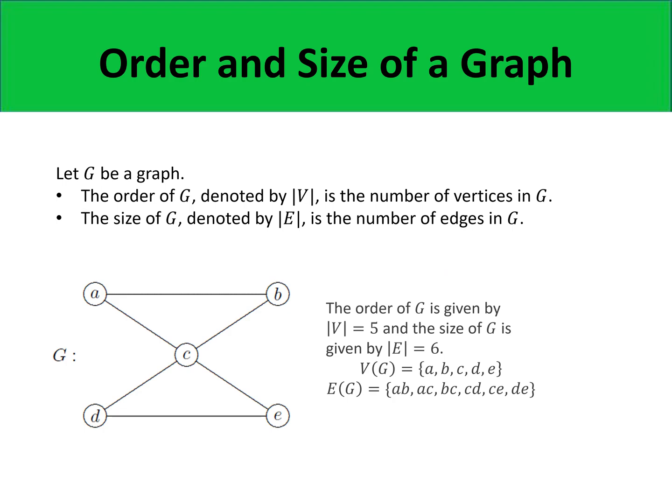The order and size of a graph is just the number of vertices and the number of edges that you can find from the graph. For example, in this particular graph on your screens, the number of vertices is 5 and the number of edges is 6. So therefore, the order of this graph G is 5 while the size is equal to 6.